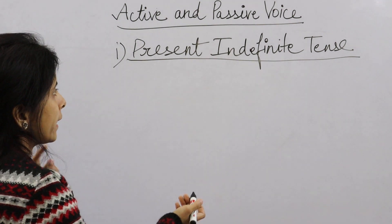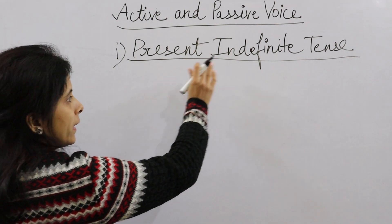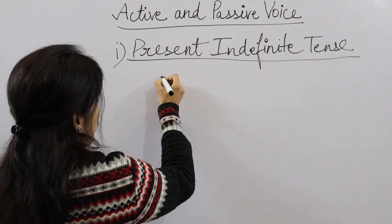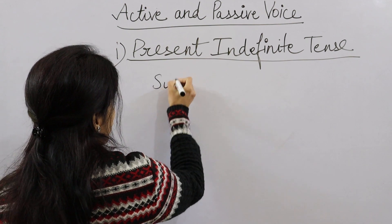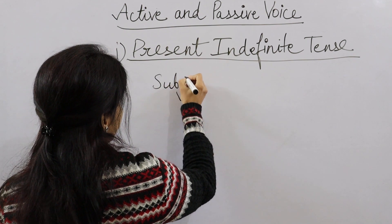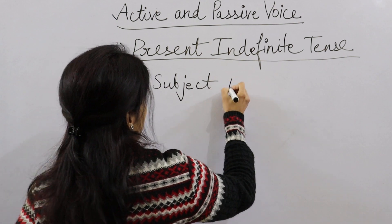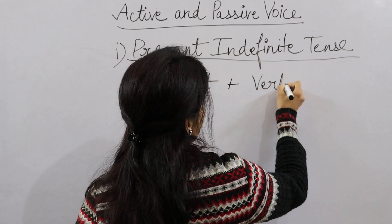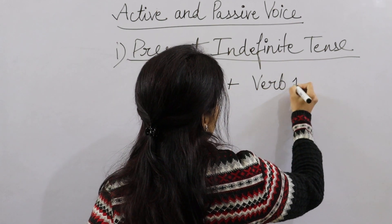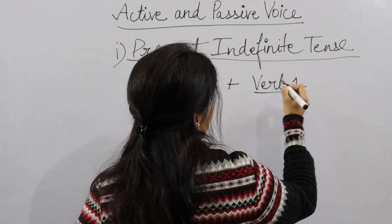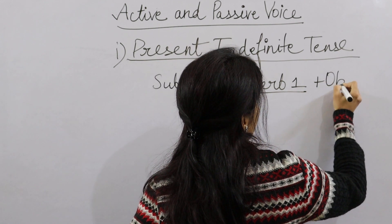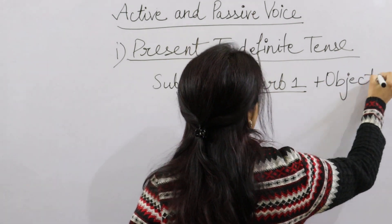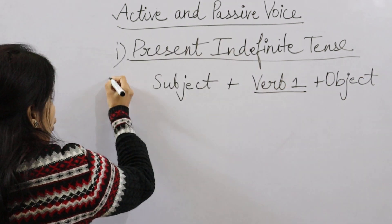A simple sentence in present indefinite tense follows this formula for active voice: Subject + Verb first form + Object. This is your active voice formula.